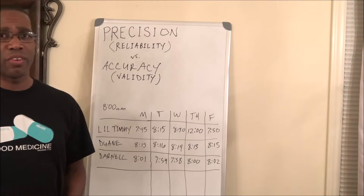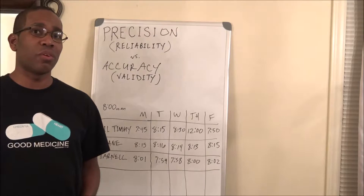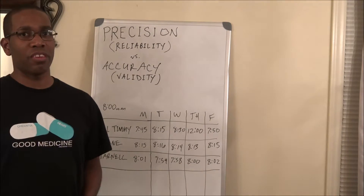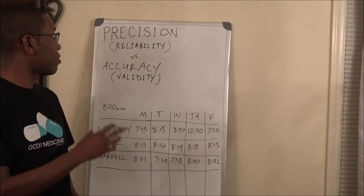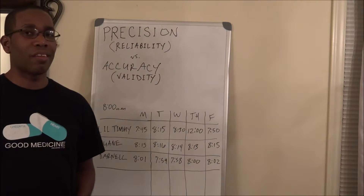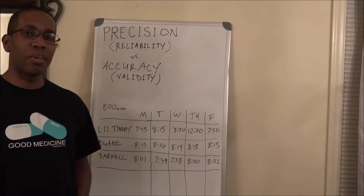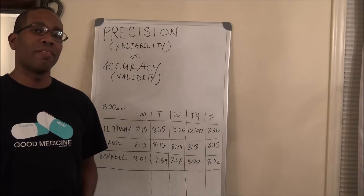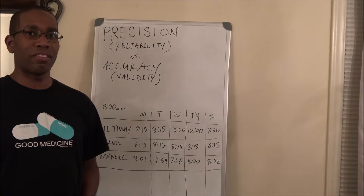Now a lot of times on the USMLE, they try to trick you because they don't use the words precision and accuracy. They use other terms that are synonyms, which are reliability and validity. Reliability means the exact same thing as precision. Validity means the exact same thing as accuracy.